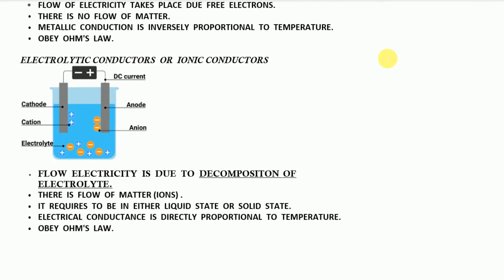The second type of conductor is the electrolytic conductor or ionic conductor. As covered in previous videos on electrolysis, we consider an electrolyte and connect a battery to two electrodes. The positive terminal of the battery is connected to one electrode and the negative terminal to another, so one electrode becomes positively charged and the other negatively charged.